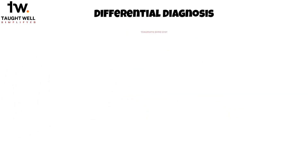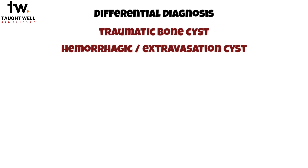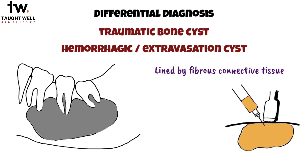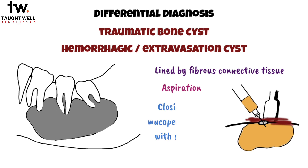Similarly, cystic apical periodontitis should be differentiated from a traumatic bone cyst, also known as a hemorrhagic or extravasation cyst. Unlike cysts, traumatic bone cysts are hollow cavities lined not by epithelium but by fibrous connective tissue. The treatment approach for a traumatic bone cyst typically involves aspiration of fluid through a small surgical cavity in the bone, enlarging the opening for irrigation and aspiration until the wound fills with blood, and finally closing the mucoperiosteum with sutures.